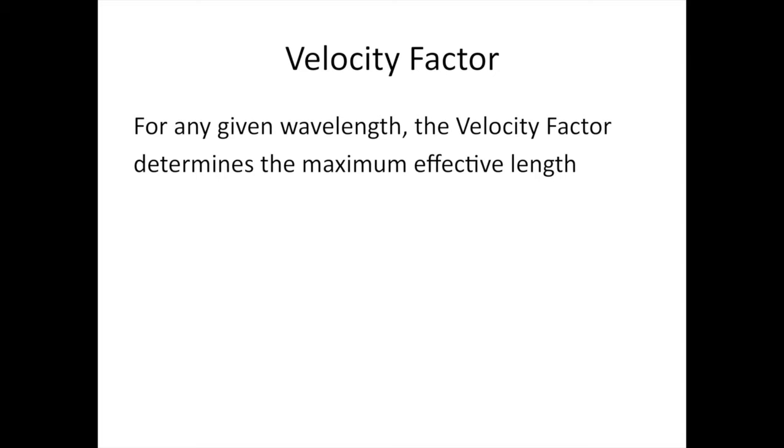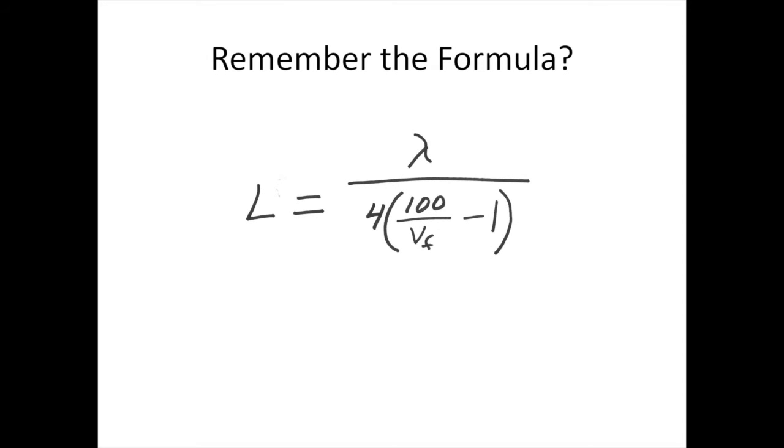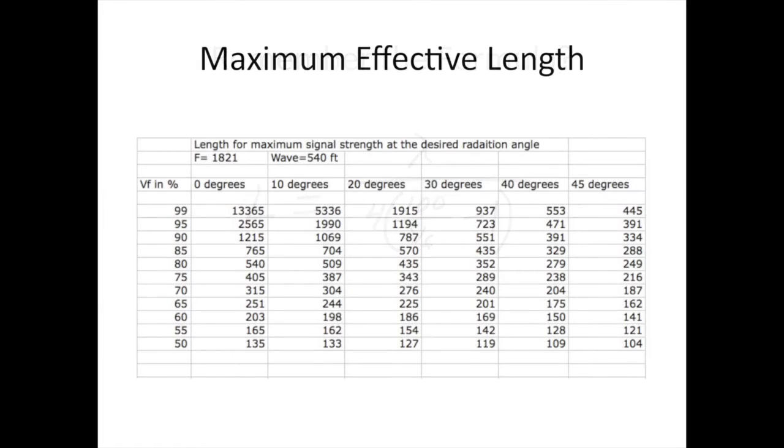Well really there are quite a few things you can do. For any given wavelength, the velocity factor is the main element in determining the maximum effective length. Now remember the formula. This formula uses velocity factor. I have run the numbers in the formula for a zero degree wave angle. Velocity factor of 90 percent gives you a 1215 foot antenna. The velocity factor goes down to 75, the antenna length calculates out to be 405. For a 50% velocity factor you are looking at 135 foot length of wire. So now we are bringing the length of the wire down significantly.